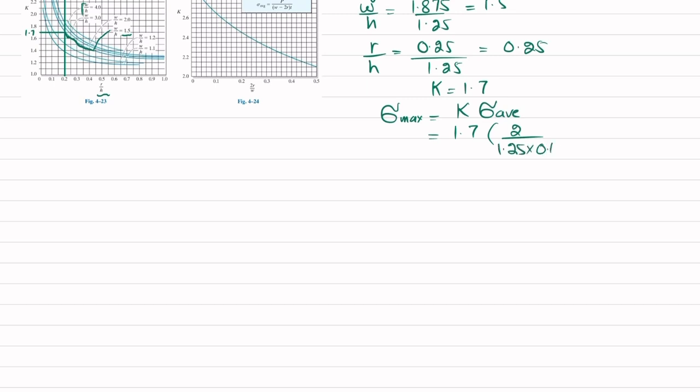K is 1.7, and sigma average is equal to P divided by A. P is 2 kips divided by the area on which it acts. This is the area: height is 1.25 and thickness is 0.125.